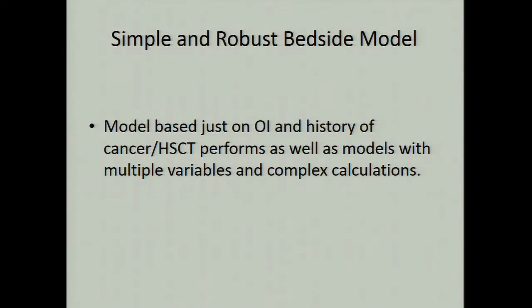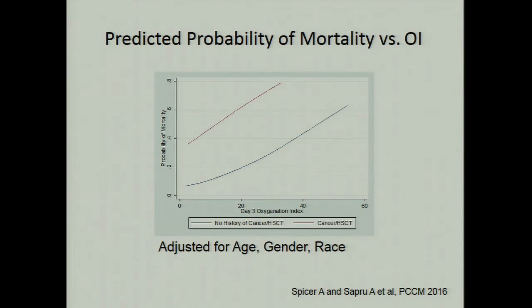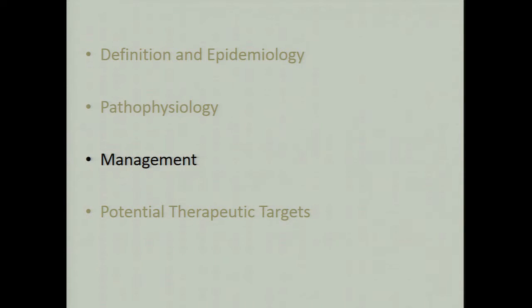Aaron Spicer, who led much of this work, was tasked with finding a simple and robust bedside prediction model that clinicians could use for counseling families, deciding on ECLS candidacy, or qualifying patients for high-risk therapy trials. He performed multiple models and found that a model based just on OI and history of cancer/HSCT performs as well as complex models with multiple variables like PRISM or PLOD. In a model adjusted for age, gender, and race, the predicted probability of death was linear with increasing oxygenation index.